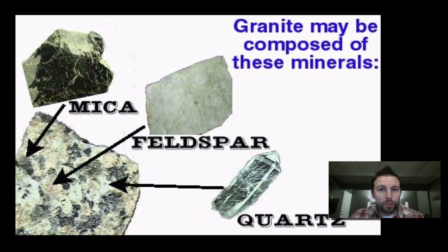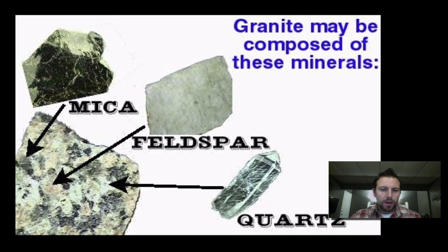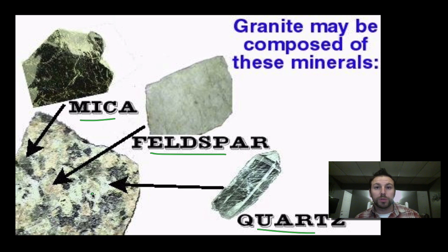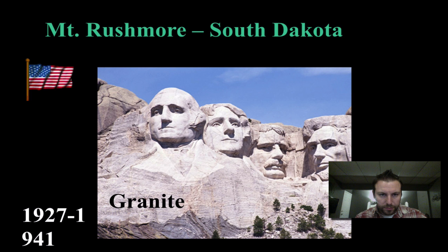Remember, minerals make up rocks. Granite, being a rock, is composed of many different minerals. Some common minerals found in granite are micas, feldspar, and quartz, and we can see them scattered throughout. Mount Rushmore in South Dakota — this entire landscape feature is made from granite.